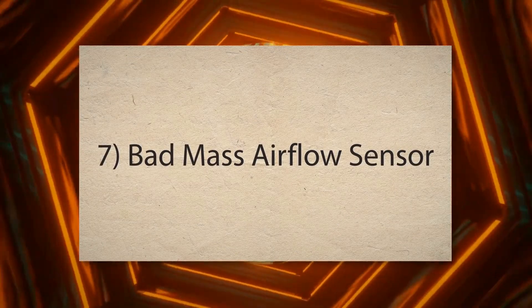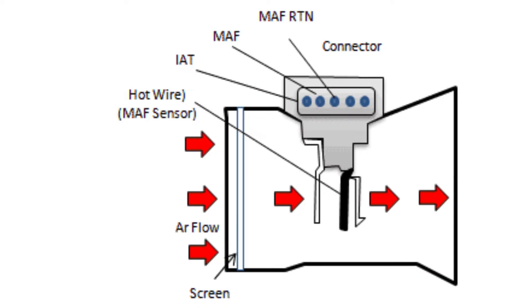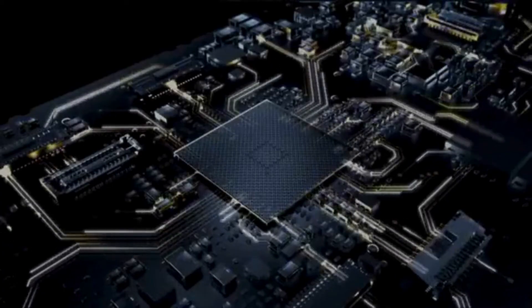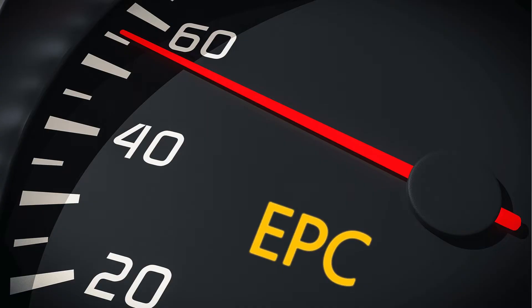Seventh, bad mass airflow sensor. The MAF sensor measures the amount of air entering the engine. If the MAF sensor becomes faulty, it may cause incorrect air-fuel mixture readings, leading to the EPC light being illuminated.